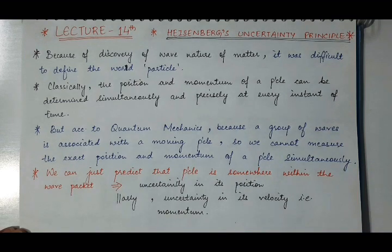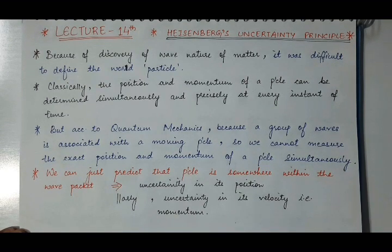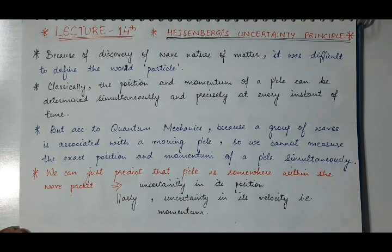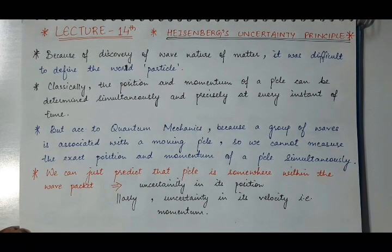According to classical mechanics, where we deal with the motion of macroscopic bodies, the position and the momentum of macroscopic bodies can be determined simultaneously as well as accurately at every instant of time. But in case of quantum mechanics, where we deal with microscopic bodies, it is easier to determine position and momentum simultaneously and accurately in classical mechanics but not in quantum mechanics.